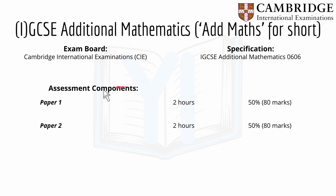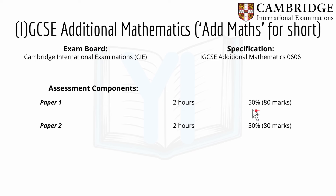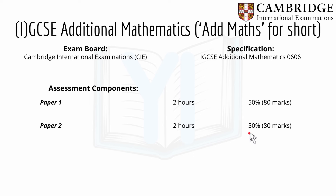For the assessment component there are two papers. Paper 1 is two hours, 80 marks, and accounts for 50% of your final grade. Paper 2 is the same — two hours for 80 marks, worth 50% of your final grade.